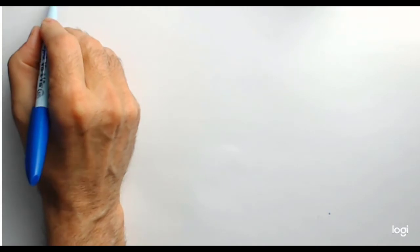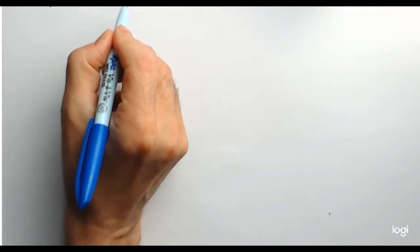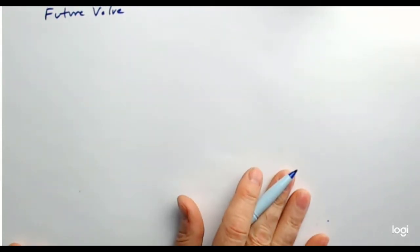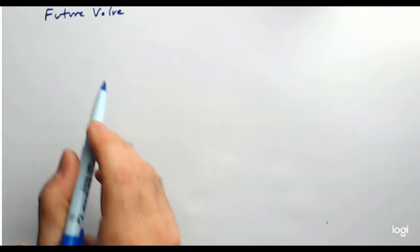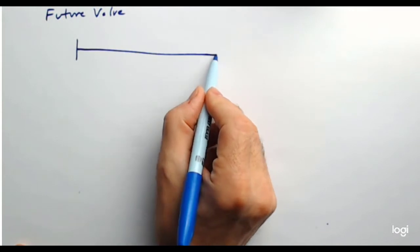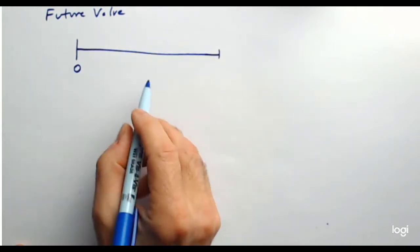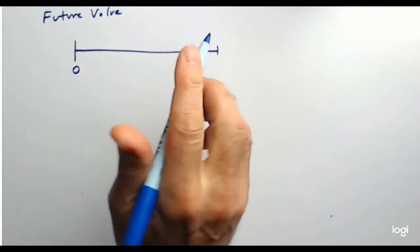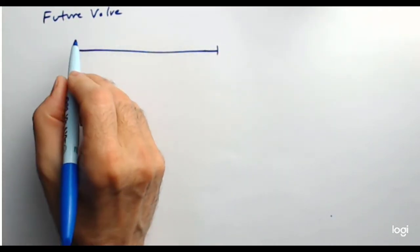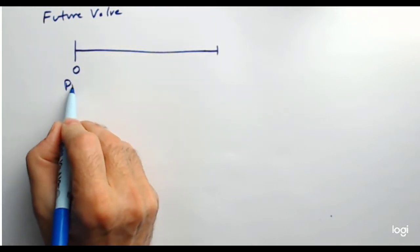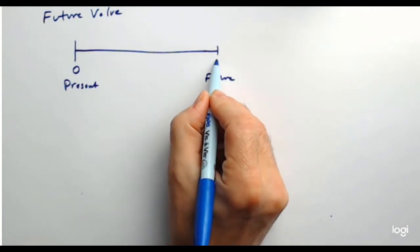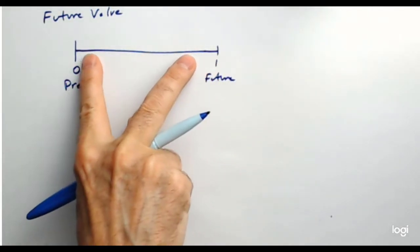Let's start off with future value — specifically, the future value of a lump sum. The way we start off with time value of money problems, we want to figure out what is the future value of an amount right here at time zero. I'm going to draw a timeline. Today is time zero — it's the present. And here is the future, let's say one year later. So this is one whole year right here.